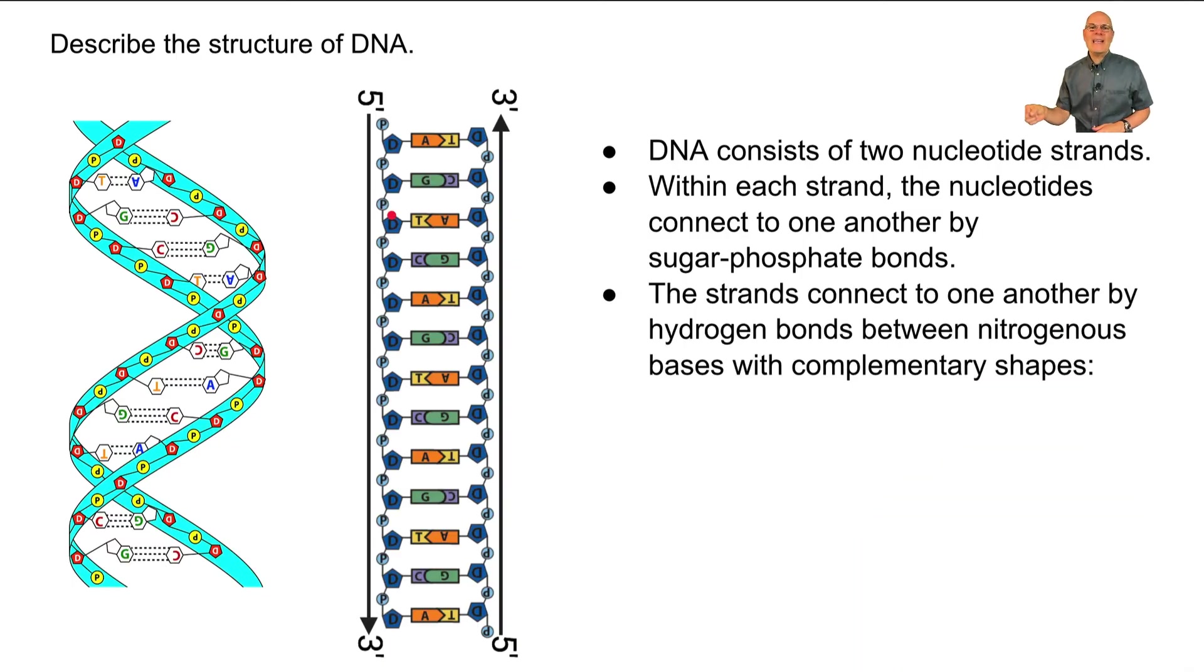But the strands connect to one another by hydrogen bonds. So here you see G connecting with C, A connecting with T. And those are rules to memorize. Adenine, A always bonds with T, C bonds with G, they have complementary shape. Their molecular dimensions are such so that they fit nicely within the helix. That's more of a story for unit six.